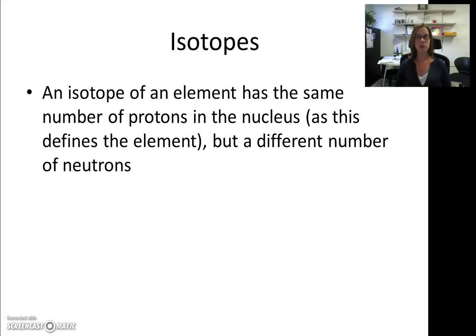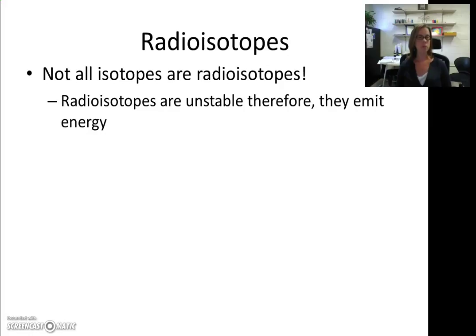You may be familiar with the idea of isotopes. An isotope is basically a version of an element that has the same number of protons in the nucleus — because the number of protons defines the element — but it has a different number of neutrons. Some isotopes are less stable than others, and these are radioisotopes. Not all isotopes are radioisotopes, but radioisotopes are unstable and therefore they emit energy.